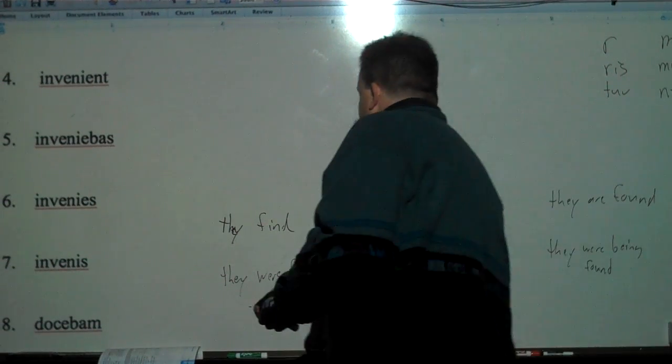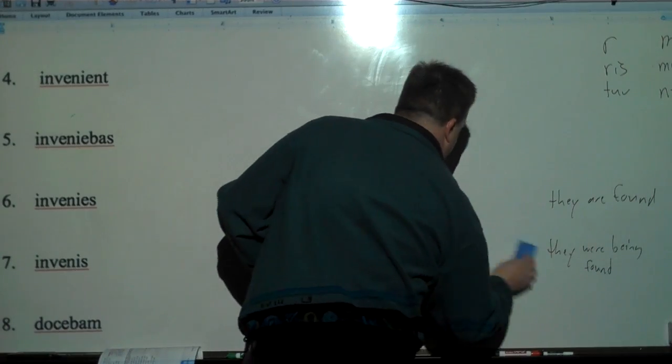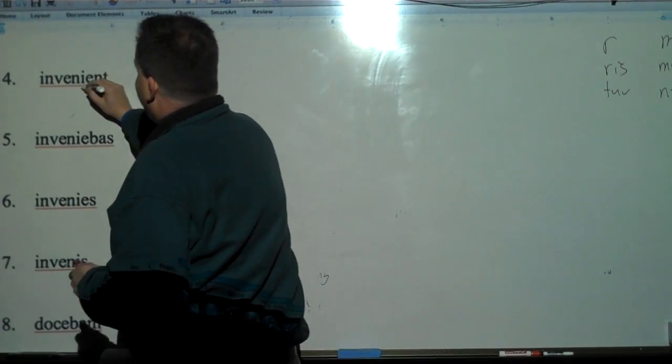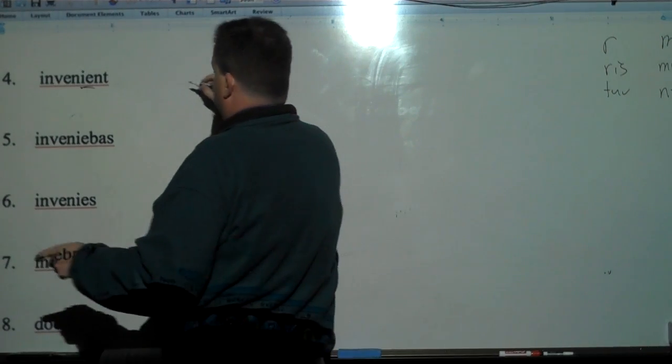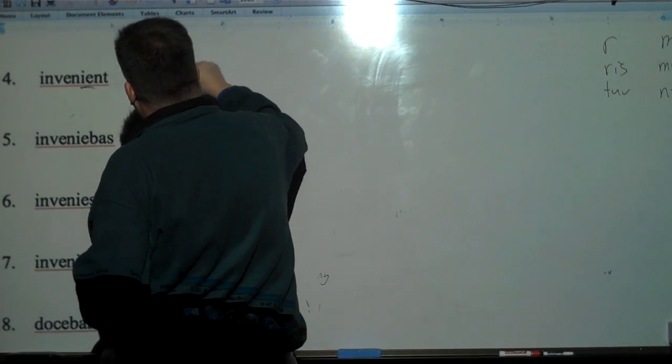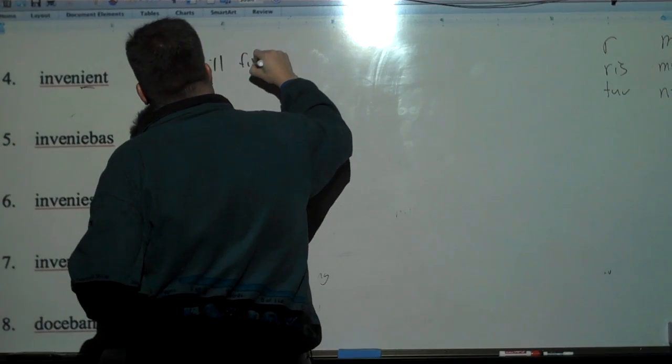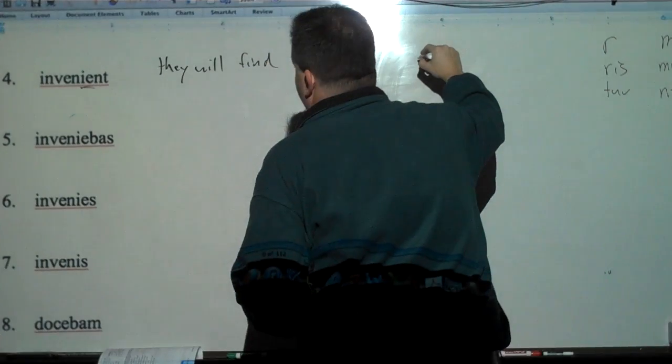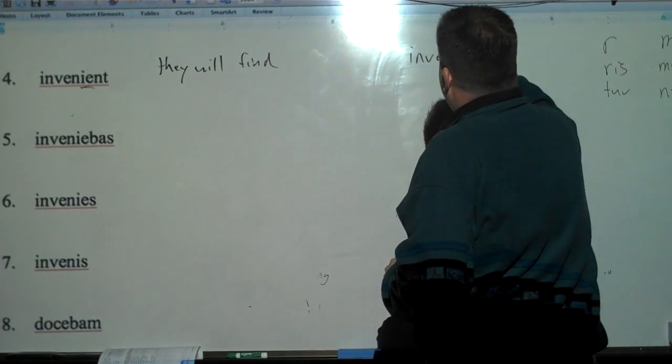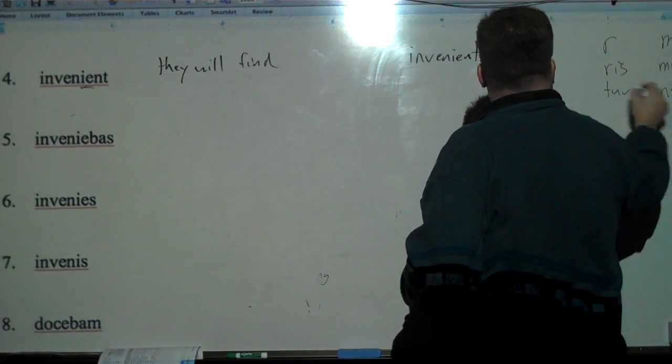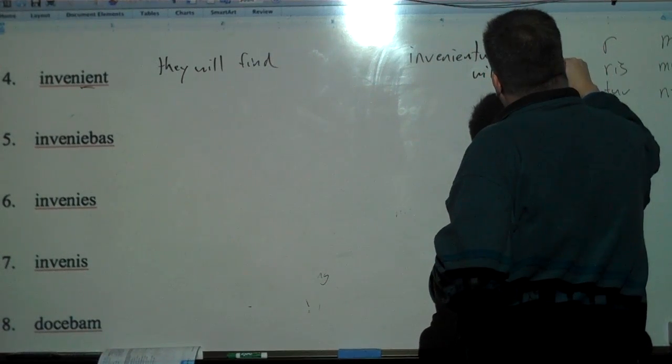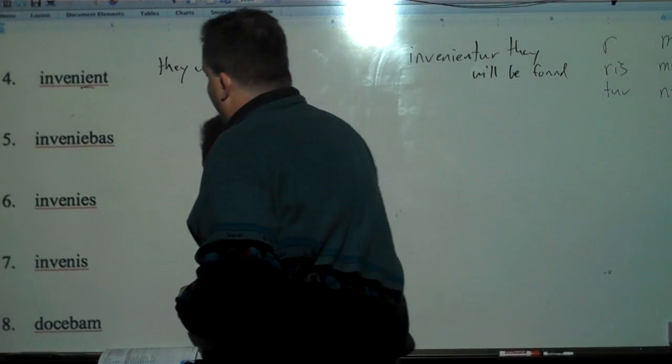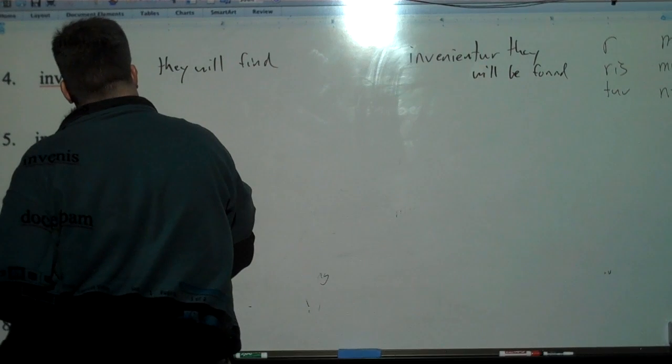Then we have here invenient. We're supposed to keep going down. Invenient. Now I-E makes it future. Invenient is present for fourth. So that's they will find. And then we go invenientur. They will be found.